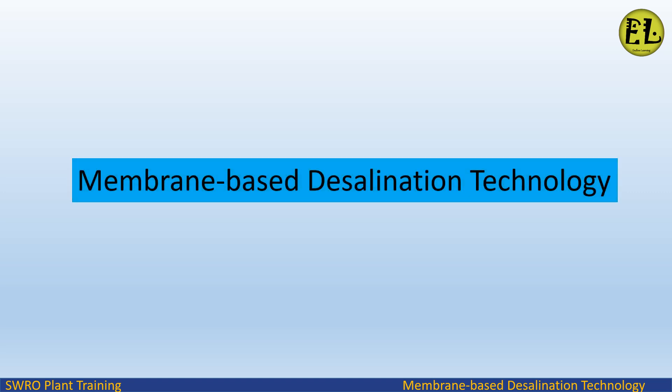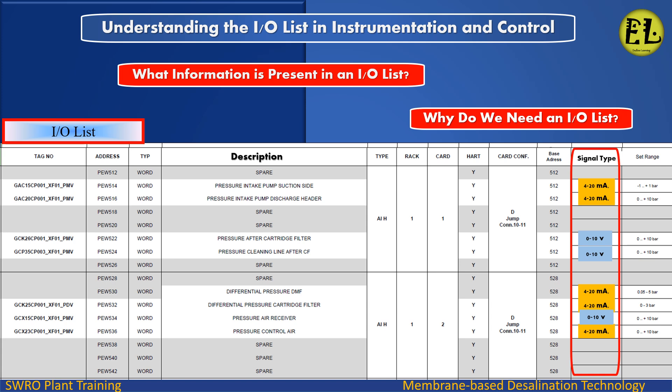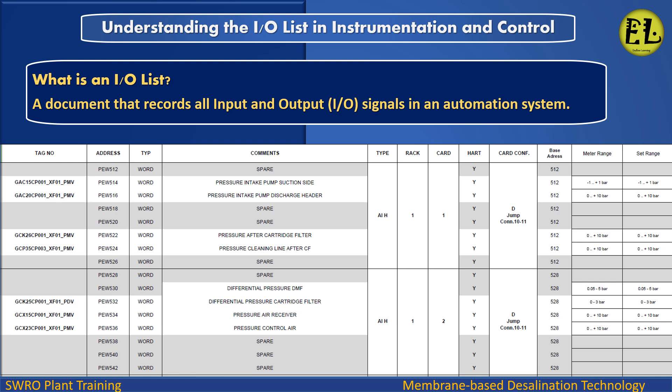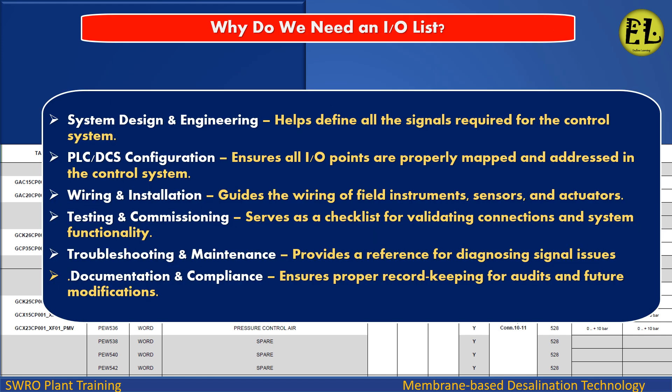Welcome to Endless Learning Training Series: The Membrane Based Desalination Technology. In this presentation we will study about the IO List in Instrumentation and Control. An IO List is a document that records all input and output (IO) signals in an automation system.